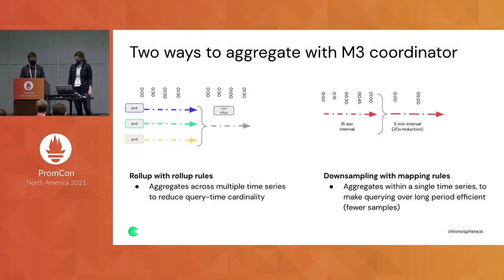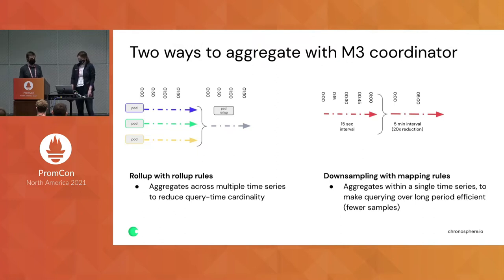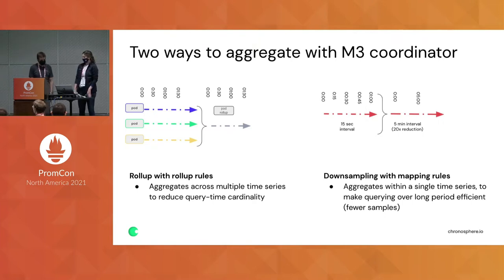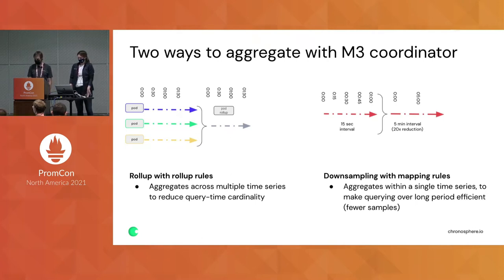Zooming in to recap those two ways of aggregating metrics: roll-up rules aggregate across multiple time series, reducing query-time cardinality. Mapping rules do downsampling by performing aggregations inside a single time series, making longer-term or larger-scale queries more efficient as they have bigger samples.